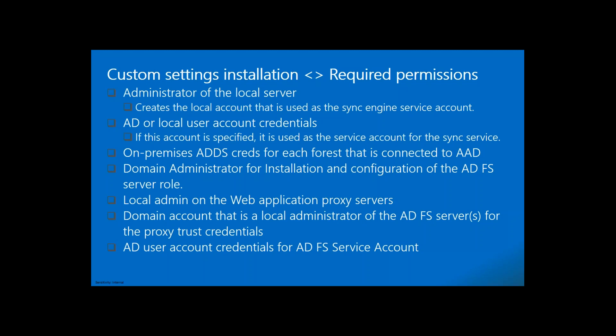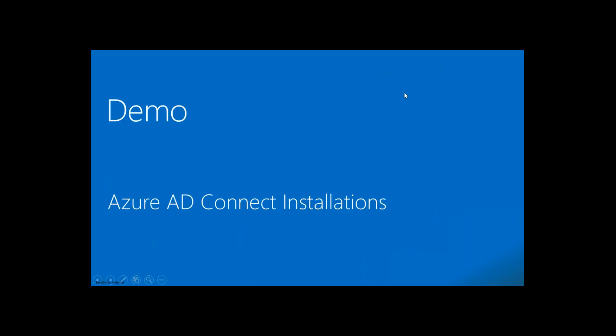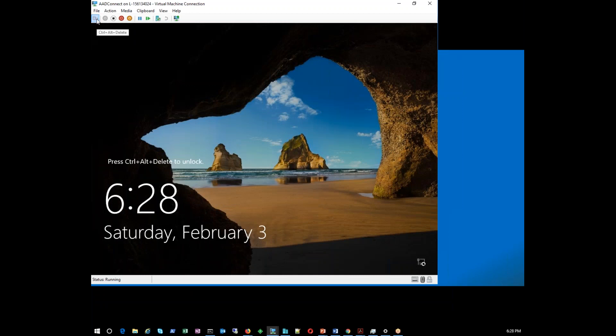In this session we are seeing only directory sync — not other features. I am going to show you how Azure AD Connect gets installed. This is my server; it is a domain-joined machine. Apart from internet connectivity it doesn't have any ports open, and it is sitting in the corporate backbone. You don't need to install it in a DMZ and you don't need to fight for firewall openings for AD Connect.